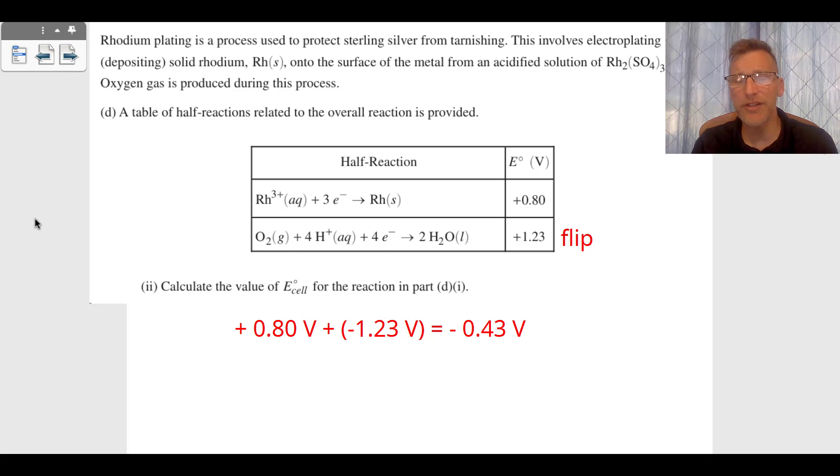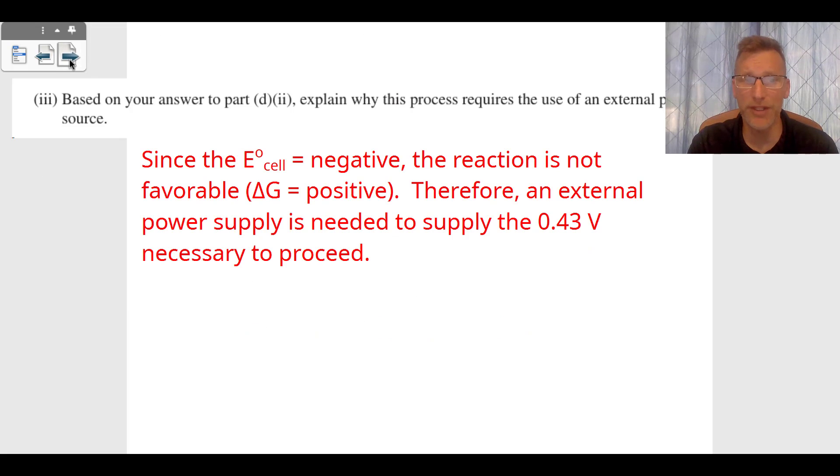They wanted us to calculate the standard cell potential or the E of the cell. Well, we kept the positive 0.80, we flipped the bottom one which meant that was negative 1.23 volts. It gave us our overall voltage of negative 0.43 volts. And you know what the next question is? The next question is saying, based on your answer, which means you have to stay consistent, explain why this process requires the use of an external power source. Since the cell potential is negative, the reaction is not favorable. The delta G is going to be positive. You have an equation on your equation sheet, delta G equals negative nFE. Therefore, an external power supply is needed to supply the 0.43 volts to plate on this rhenium.